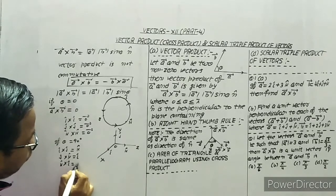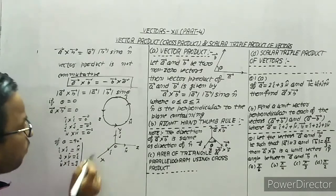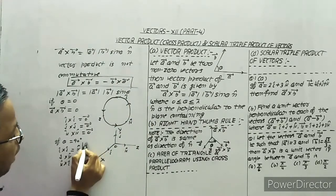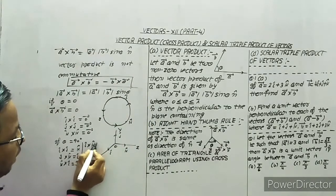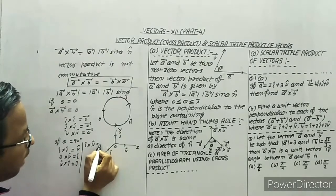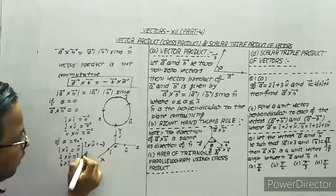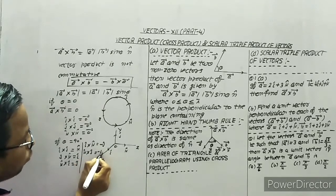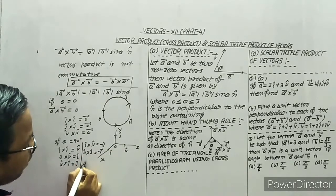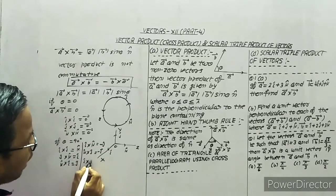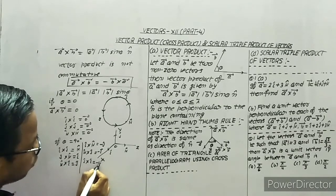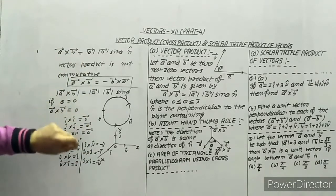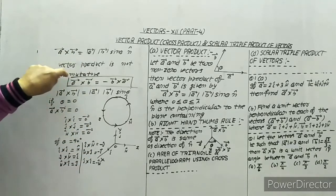For the reverse direction: i cross k equals minus j, k cross j equals minus i, and j cross i equals minus k. All these results we will use to find a cross b.